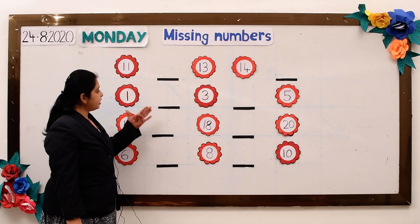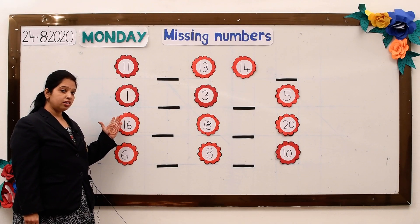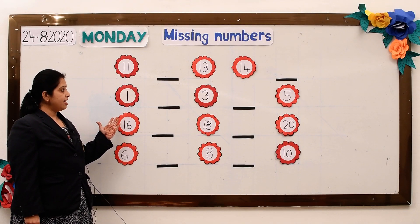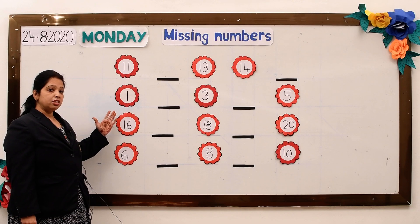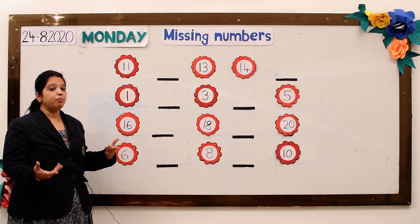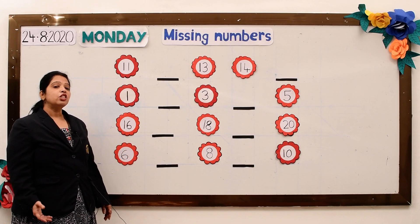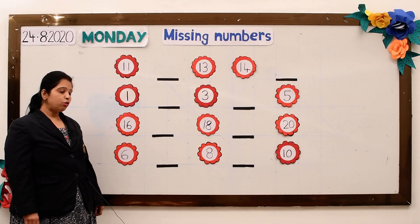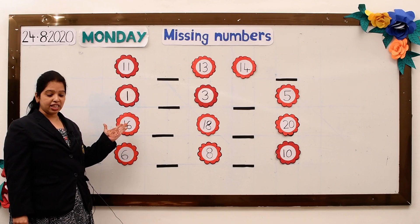So children, can you see the numbers on the board? Yes, these are the numbers but in them some numbers are missing. So let us find out which numbers are missing.